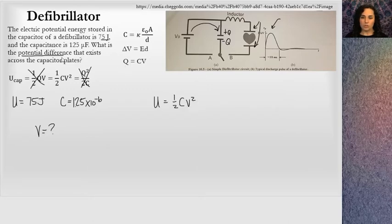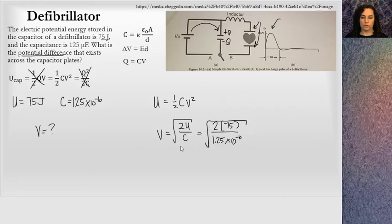I'm asked for the potential difference. So let me solve for the potential difference here. The voltage equals 2 times the energy divided by the capacitance and then take the square root. So I can plug values in there now, 2 times 75 and then divide by the capacitance, 1.25 times 10 to the negative 6 square root. So when you run this through your calculator, you're not going to be surprised that this is a large voltage. For this situation here, it's 1,095 volts or you could say 1.1 kilovolts.